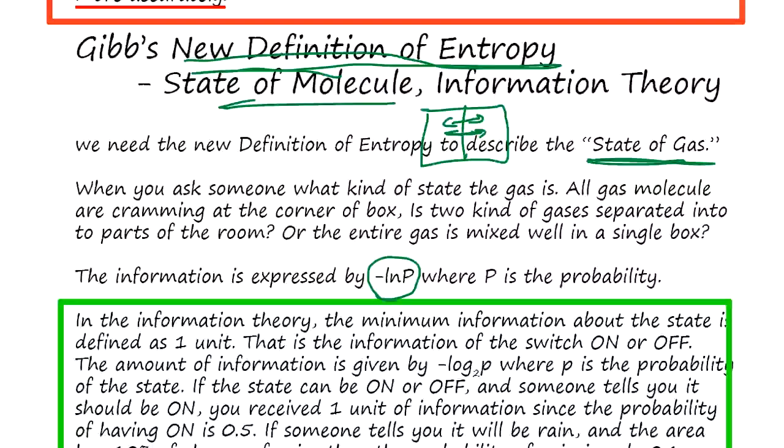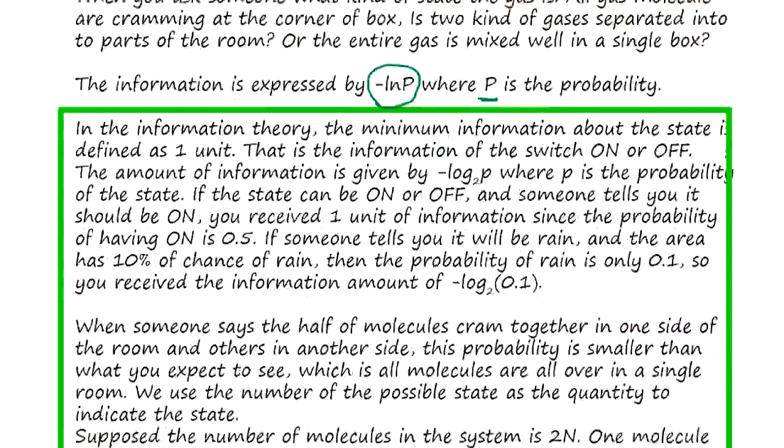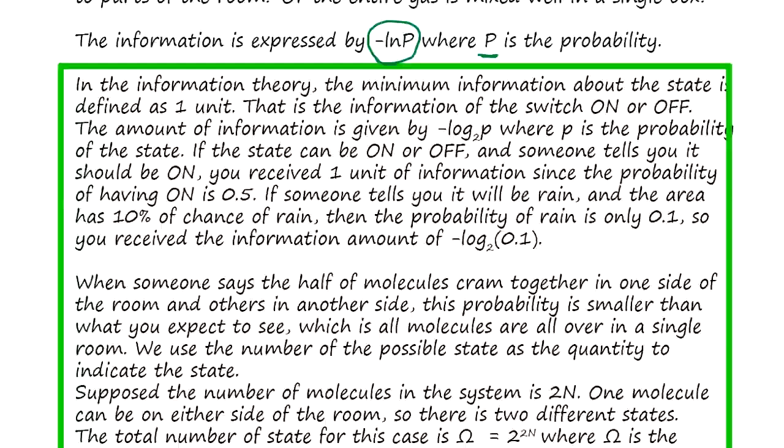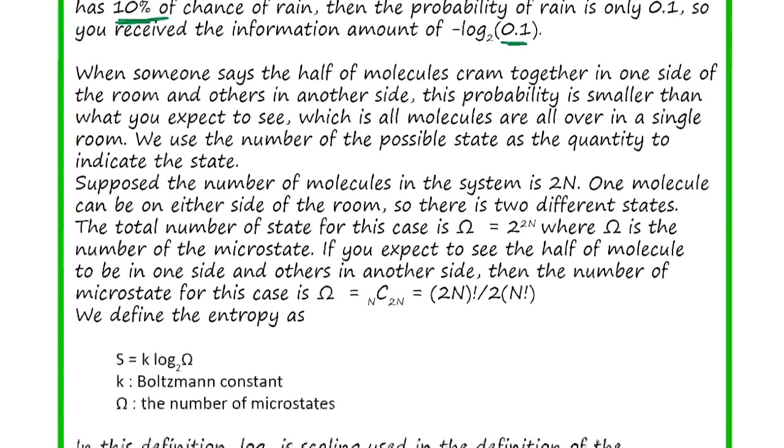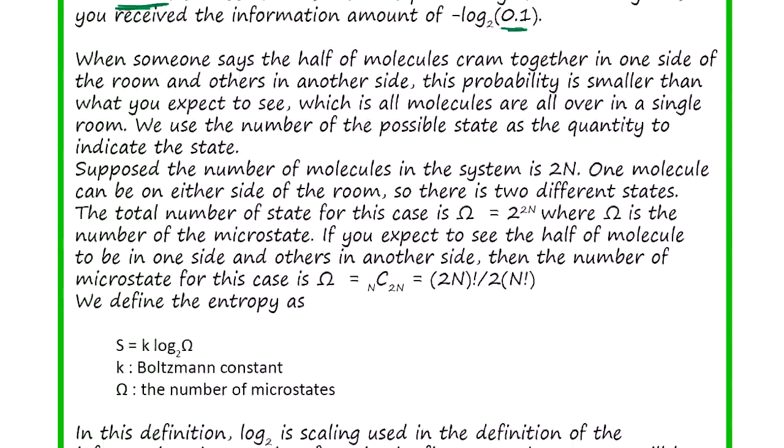In information theory, if you are not sure where - the P is 50-50, 0.5 - so this is going to be one. That is the unit of information. The unit information is one. If we know 10 percent of chance, then you have more information. Using this idea, he formulated entropy.